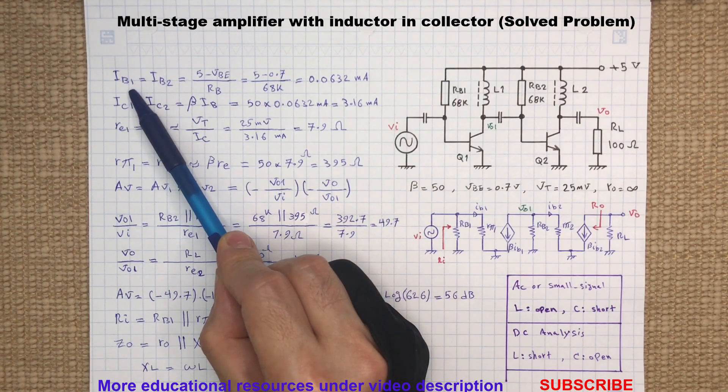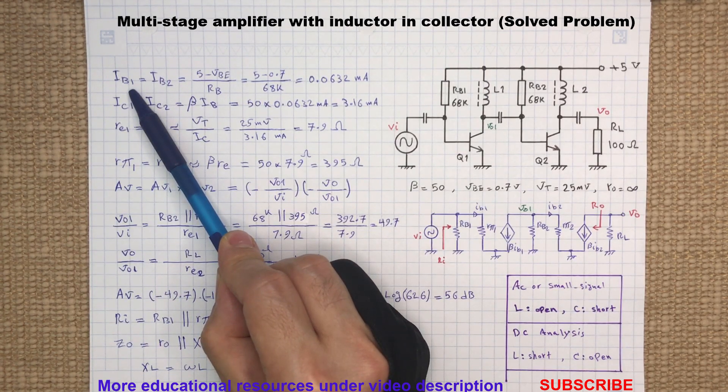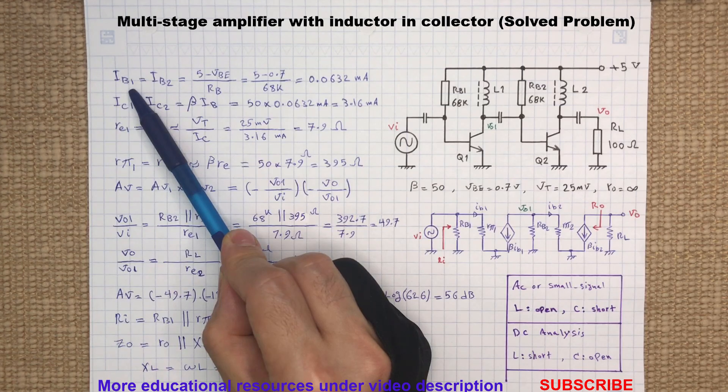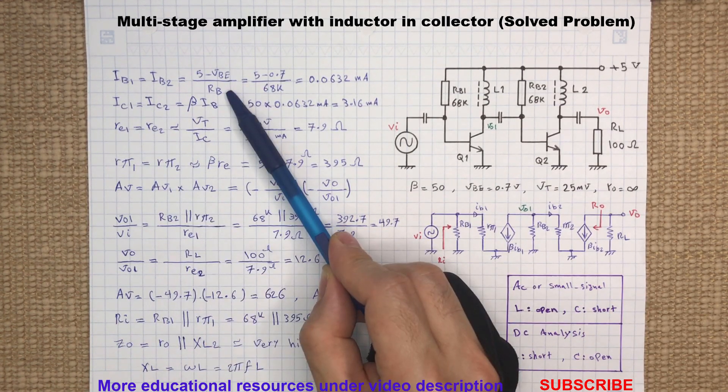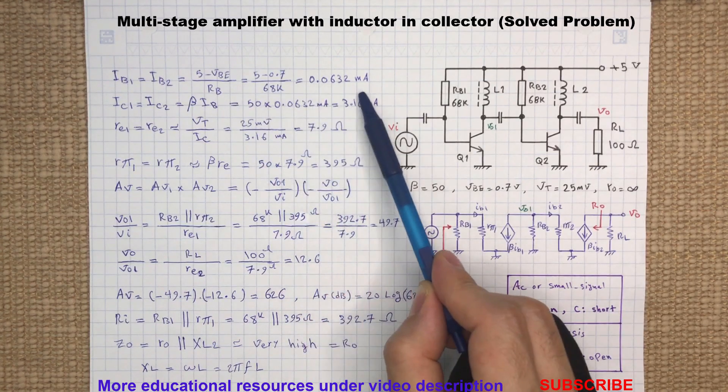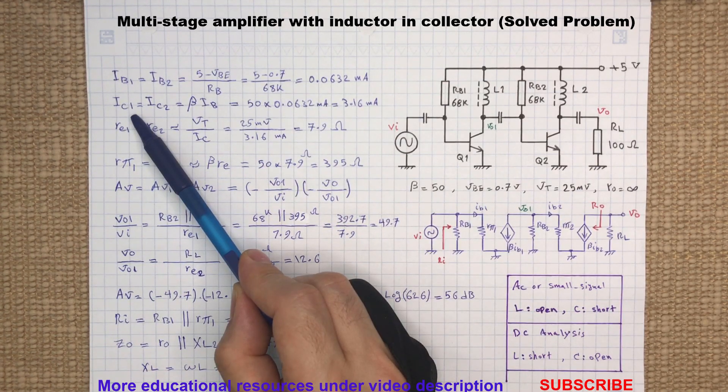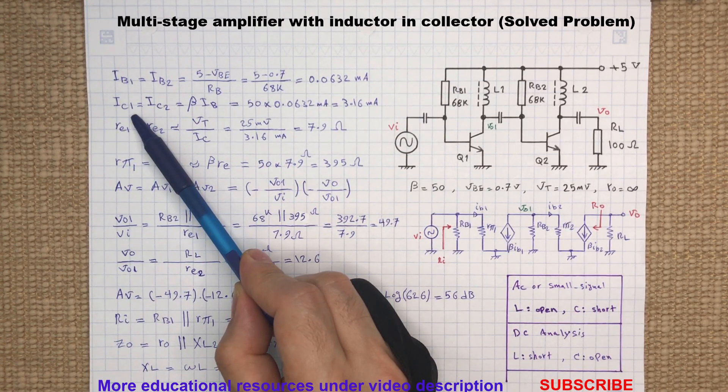So for both transistors, the base current can be calculated by subtracting the base emitter junction voltage from the 5 volt power supply, and divide it by the base resistor Rb. The collector current can be obtained by multiplying beta by the base current.